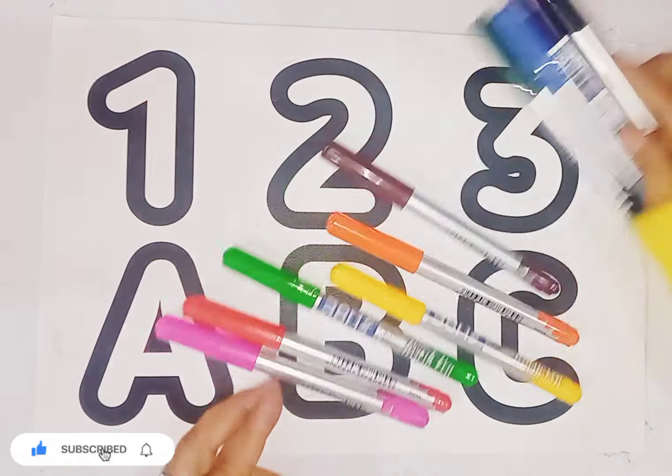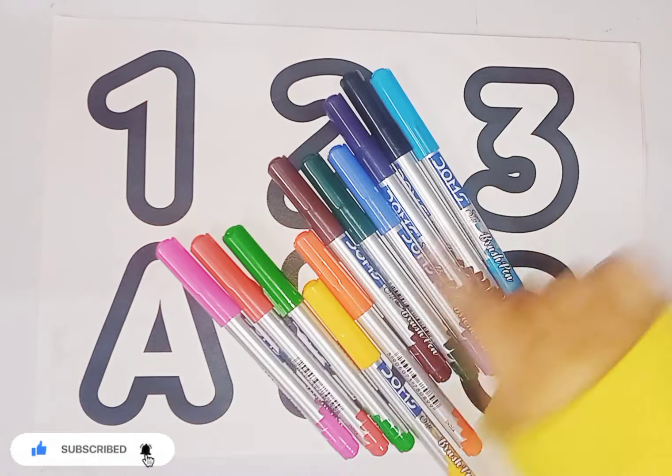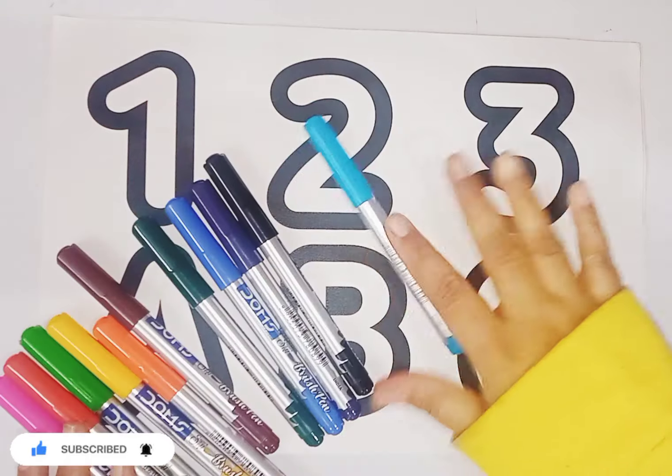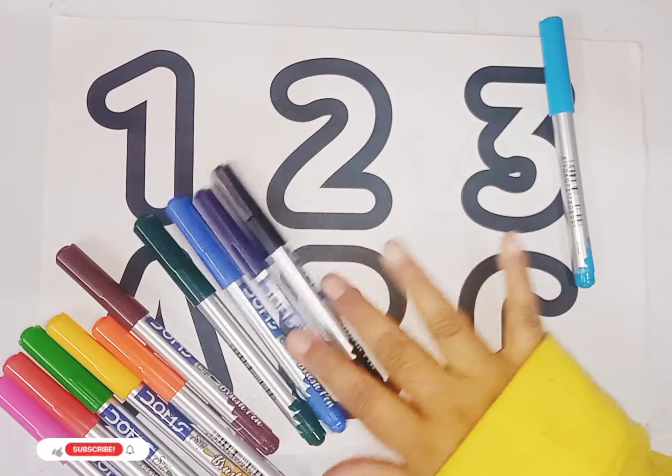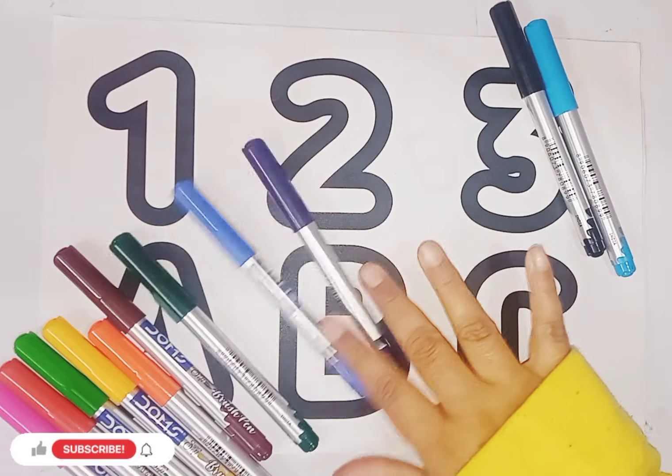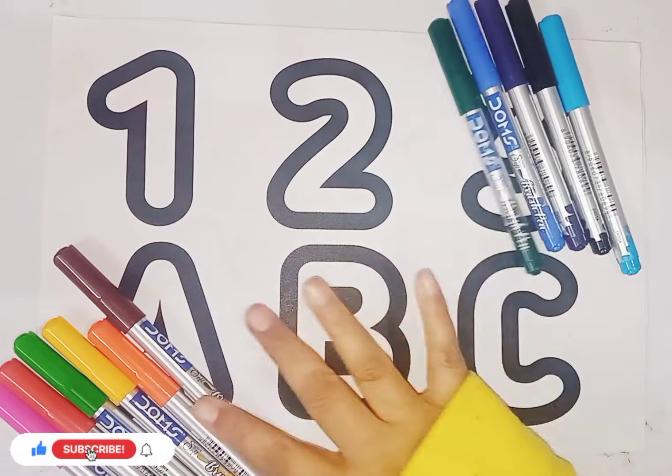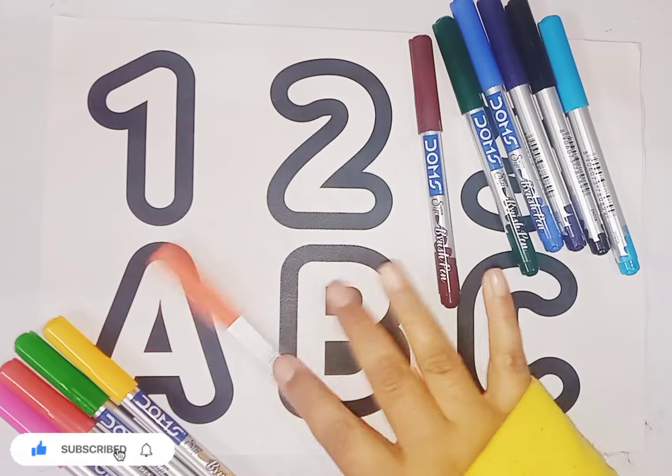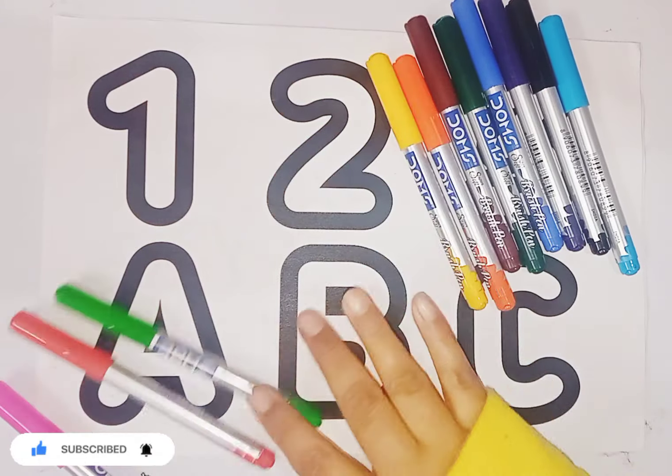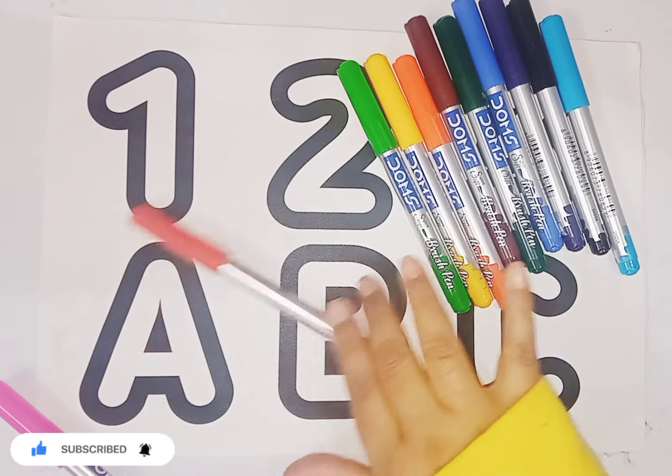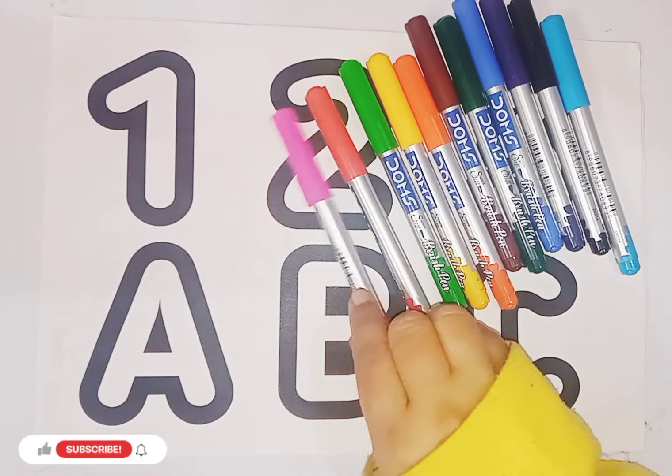Let's learn some colors. These are colors. This is sky blue color, black color, violet color, blue color, green color, brown color, orange color, yellow color, light green color, red color, pink color.